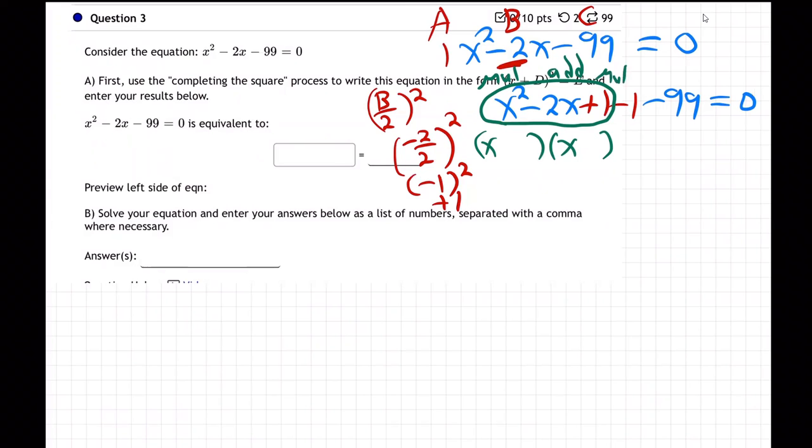You want multiply, add, multiply, right. So what two numbers multiply to be positive 1, add to be negative 2. It's going to be negative 1, negative 1. Negative 1 times negative 1 is positive 1, they multiply to be positive, right.